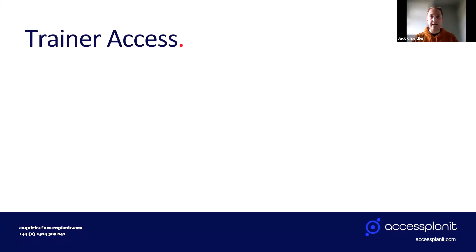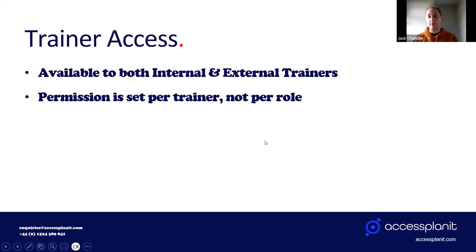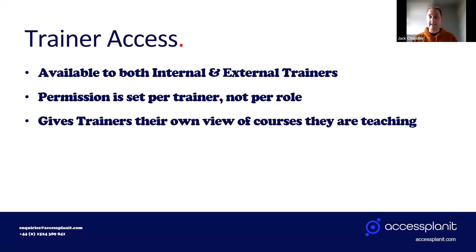The next thing to cover is the trainer access function — this is where we give trainers direct access into the platform. It works for both internal and external trainers, and permission is set per trainer, not per role. So if you trust some trainers more than others, you can give them more permissions within the platform — it's very customisable and doesn't have to be a one-size-fits-all approach. It gives trainers their own view of the courses they're teaching. They can see the delegates on a course, and if you allow them, they can update the status of the course and delegate statuses to help take some of that work away from your admins.